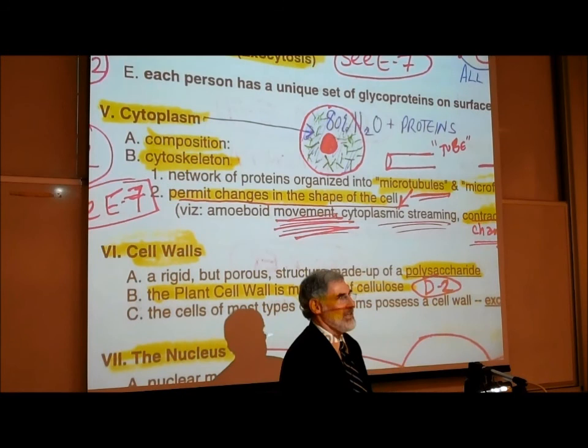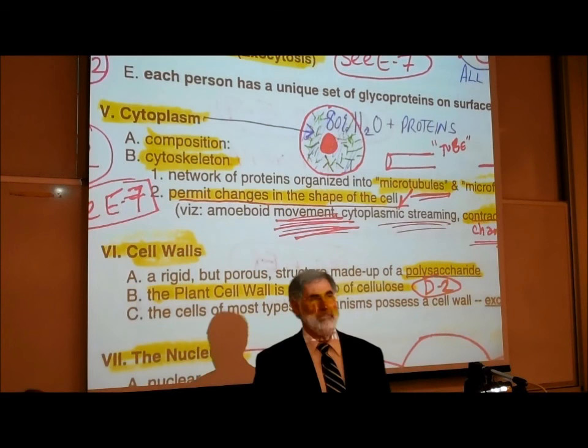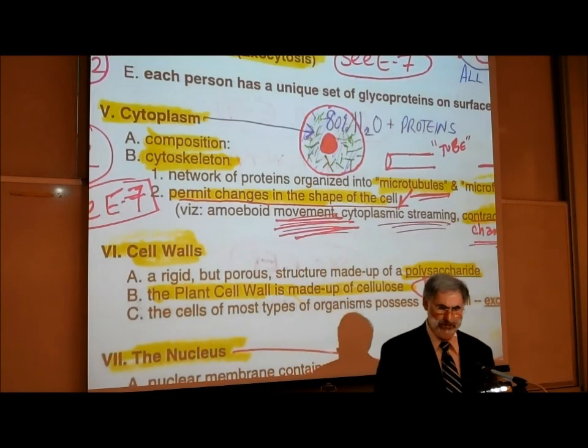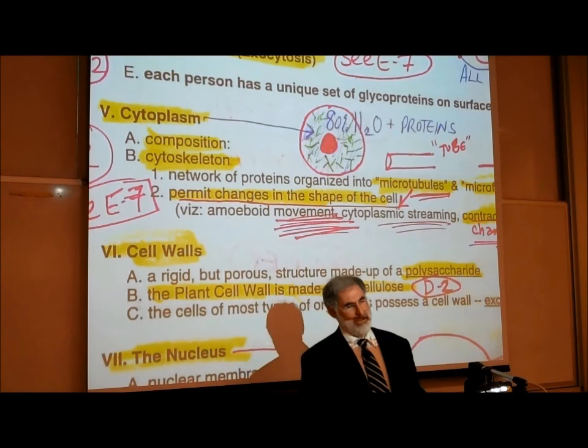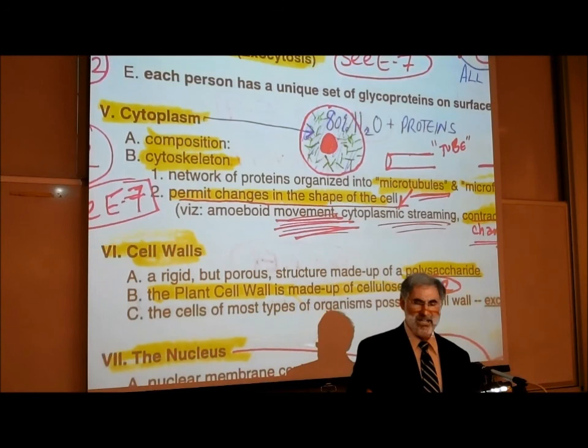Jello is actually made up of a protein — gelatin — mixed with water. When it cools down, it has the consistency of jello. Anything made up mostly of water and protein is gelatinous in consistency.